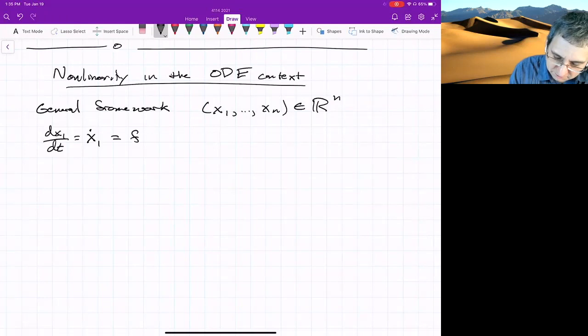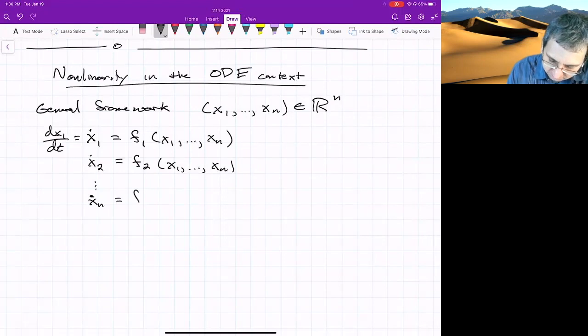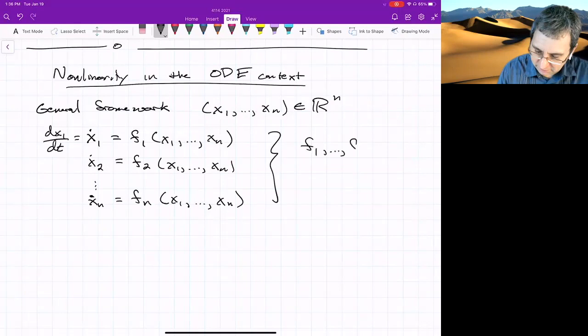And this will be a function of not just x1, but all of the other variables. And then same for x2. x2 dot will be f2, some other function of all of the variables all the way down to xn dot. These functions f1 through fn depend on the problem.